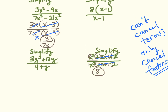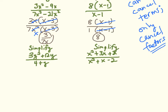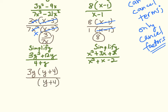The next one: 3y squared plus 12y over 4 plus y. I'm going to factor out a common factor of 3y from the numerator, giving me y plus 4. Then using the commutative property, I reverse the 4 and the y in the denominator to get y plus 4 times 1. Now it's in factored form, I can cancel the (y plus 4), so this simplifies to 3y.